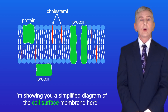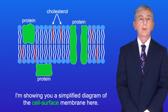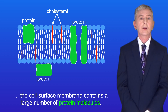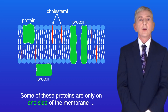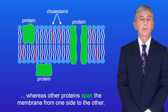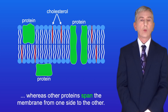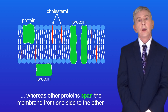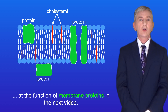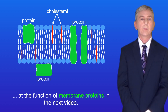Here is a simplified diagram of the cell surface membrane. The first thing to notice is that the cell surface membrane contains a large number of protein molecules. Some of these proteins are only on one side of the membrane, whereas other proteins span the membrane from one side to the other. We'll be taking a detailed look at the function of membrane proteins in the next video.